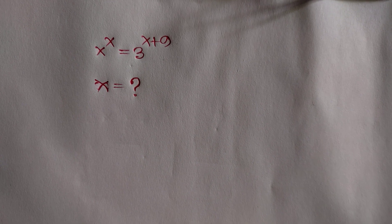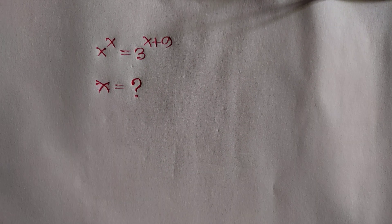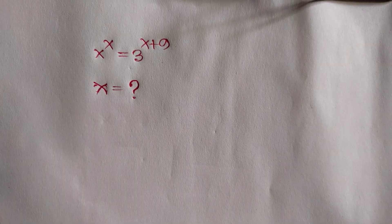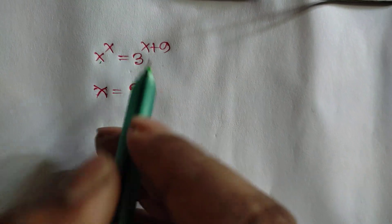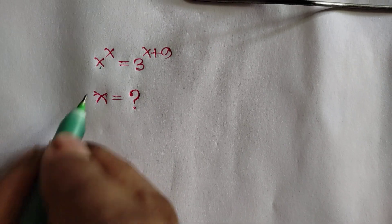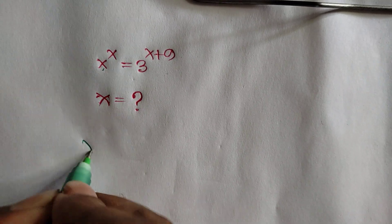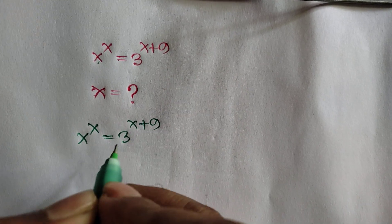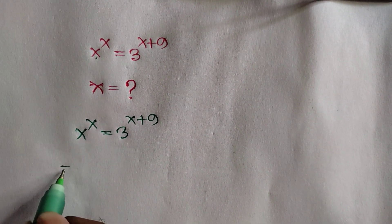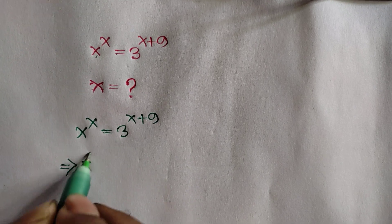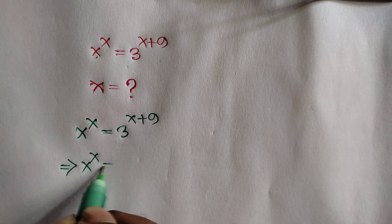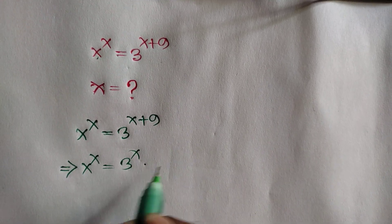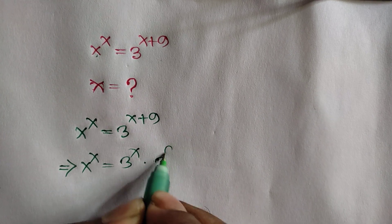Hi everyone. In this video I am going to show how to find the value of x where x to the power x is equal to 3 to the power x plus 9. We have given x to the power x is equal to 3 to the power x plus 9. Or, x to the power x is equal to 3 to the power x times 3 to the power 9.